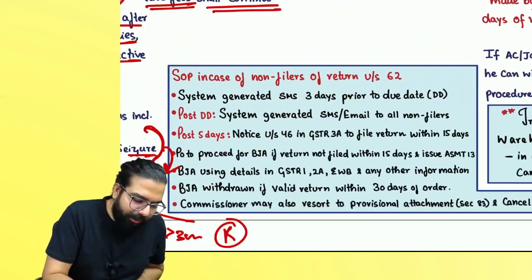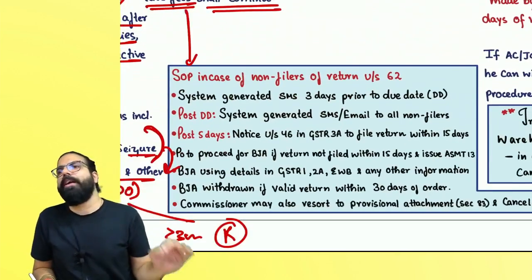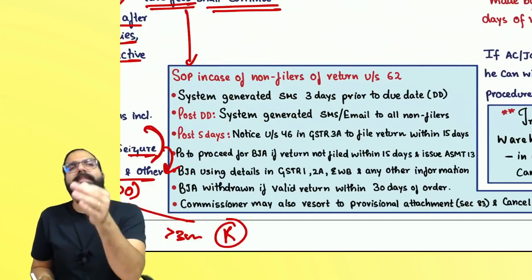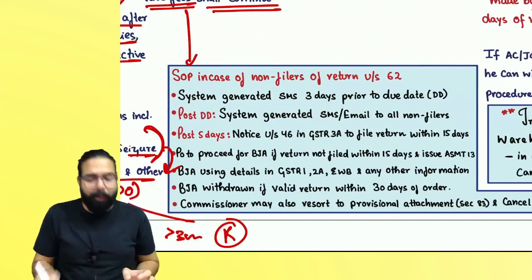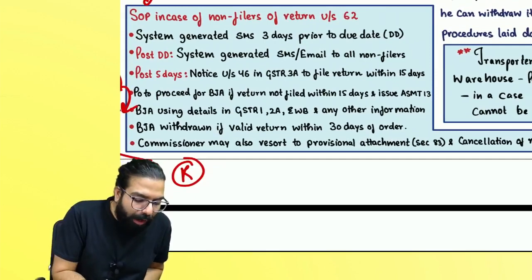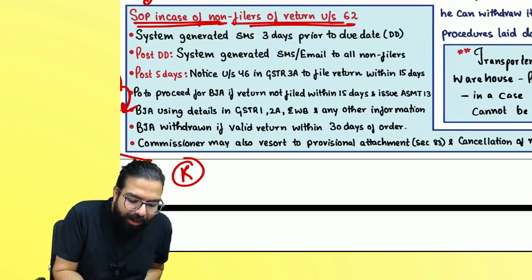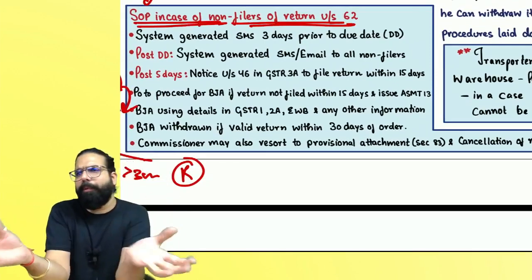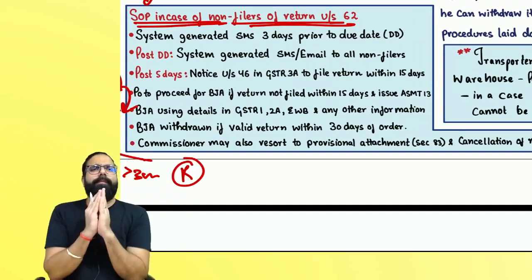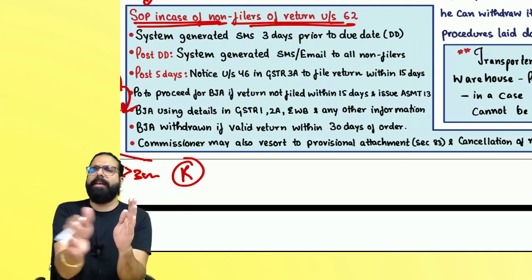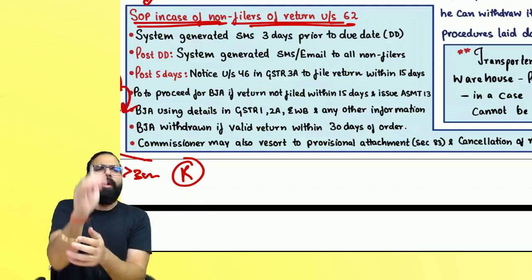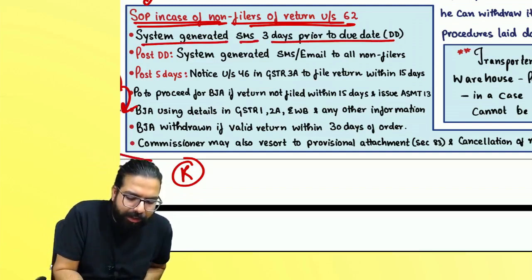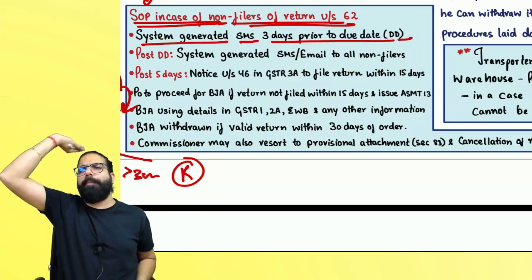The government has notified a Standard Operating Procedure (SOP) for non-filers of return, since different officers were following different procedures. CBIC has told officers this is the standard procedure to follow. One: a system-generated SMS three days prior to the due date should be sent to all taxpayers.